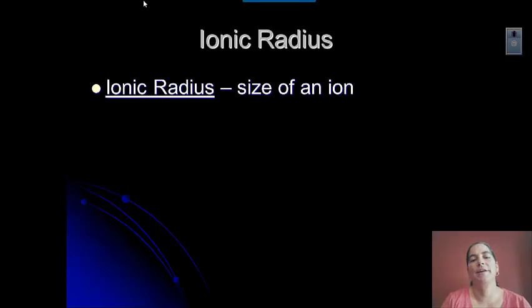So the last trend that we need to talk about in the periodic trends is ionic radius. And hopefully you guys recognize that the ionic radius is just the radius of an ion. Remember that an ion is an atom that has gained or lost electrons.